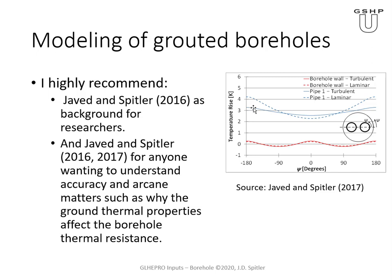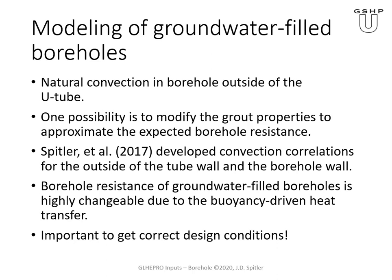The grout thermal resistance heavily impacts the total borehole resistance, but also the convection coefficient and the pipe thermal conductivity affect the overall borehole resistance in a way that may be unexpected. For example, if we used a copper tube, the temperature difference going around the tube would smooth out very nicely and would decrease the borehole thermal resistance. It's a little complicated, but to just use GLHE Pro you really don't need to know that — though if you're interested in the details, that's where you would find them.